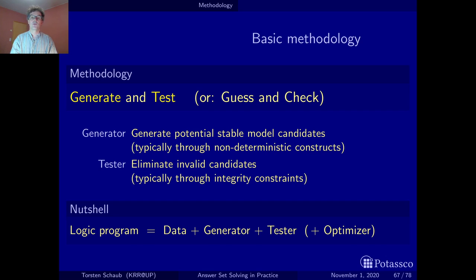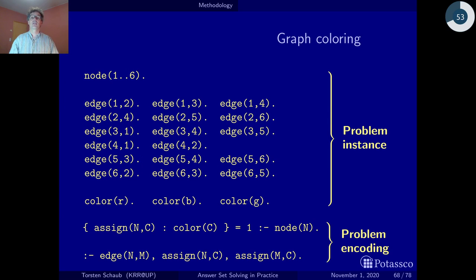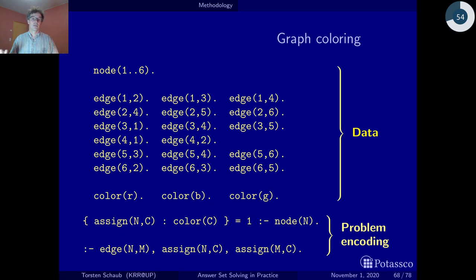Let's come back to the example briefly. In graph coloring we have this division in problem instance and problem encoding. The problem instance is the data part where you only make facts,